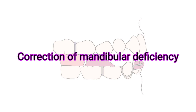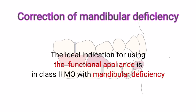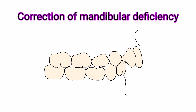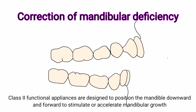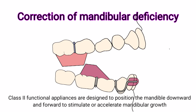Correction of Mandibular Deficiency: Functional appliances are used for growth stimulation of the mandible. The ideal indication for using the functional appliance is in Class II malocclusion with mandibular deficiency. Class II functional appliances are designed to position the mandible downward and forward to stimulate or accelerate mandibular growth.